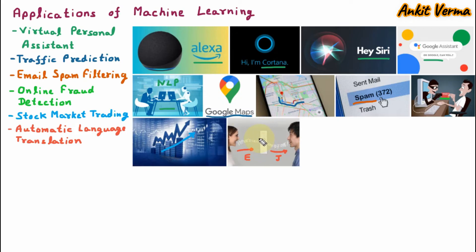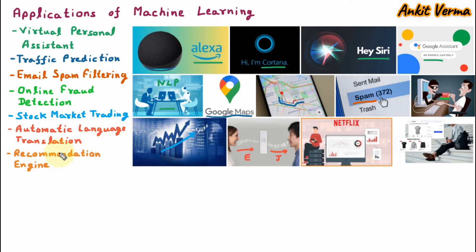The next application is the recommendation engine, meaning we are recommending something. Today Netflix, YouTube, Amazon Prime and many other OTT platforms are recommending movies and videos, which are promoted and watched by people. Similarly, Amazon, Flipkart, and Myntra recommend their products, leading many people to purchase them. This is all possible because of machine learning.